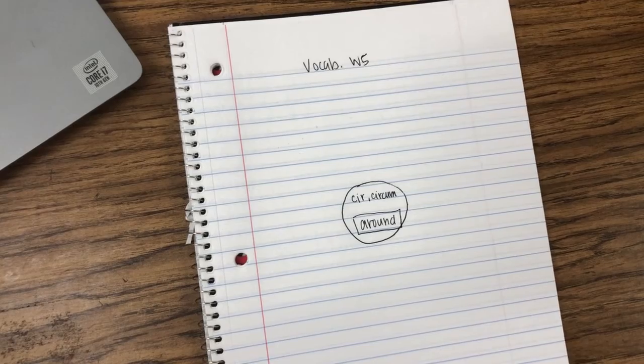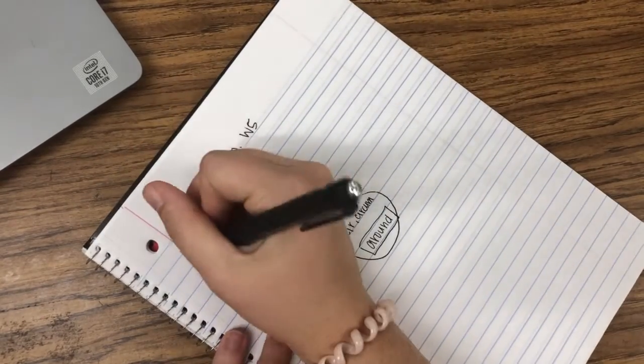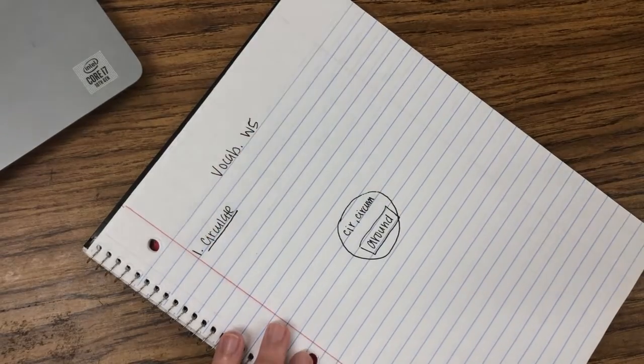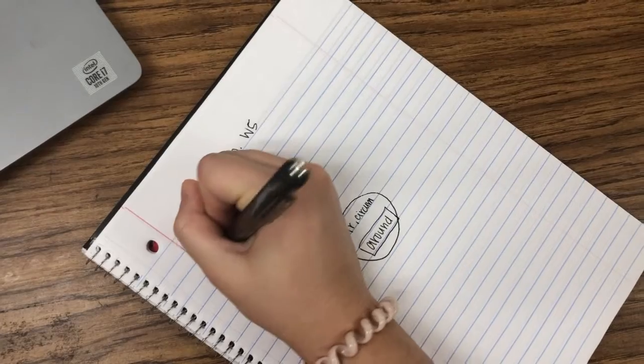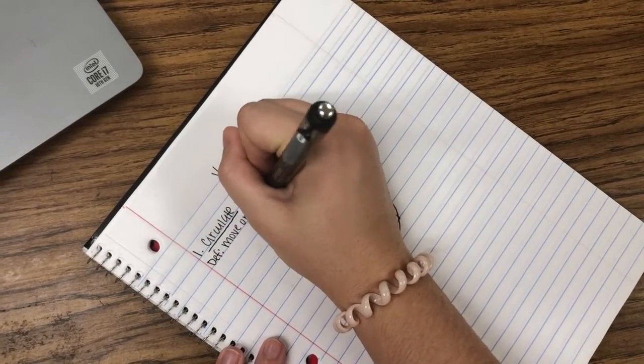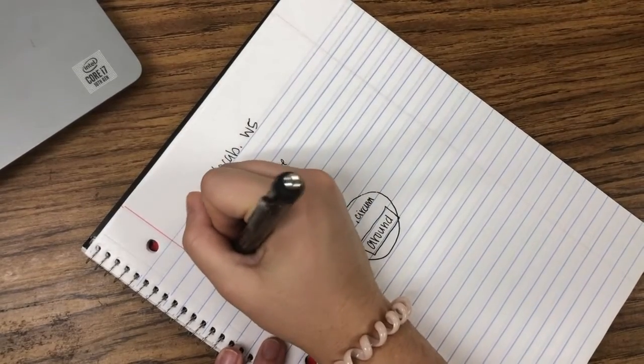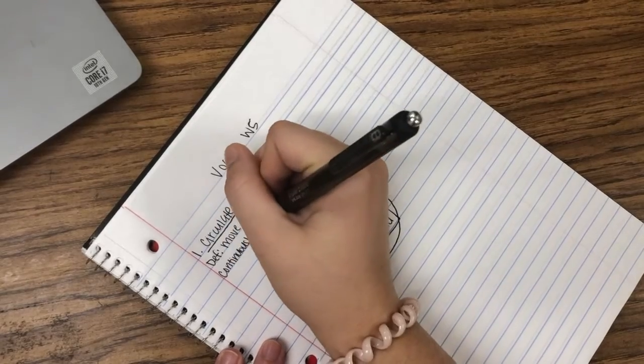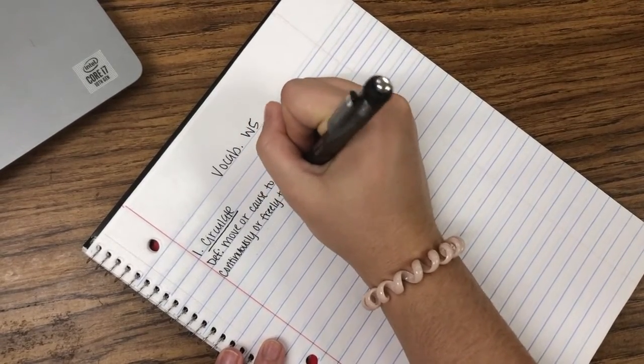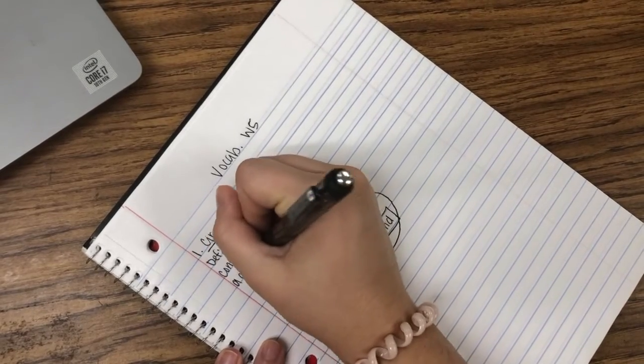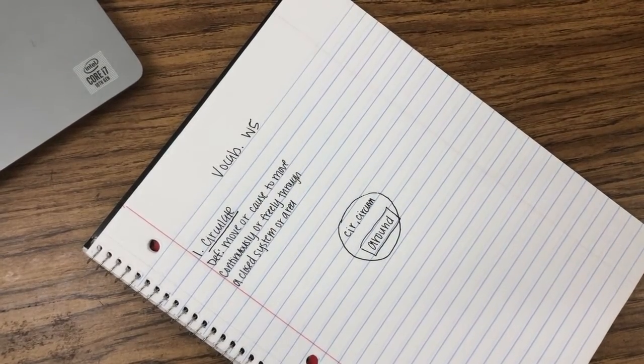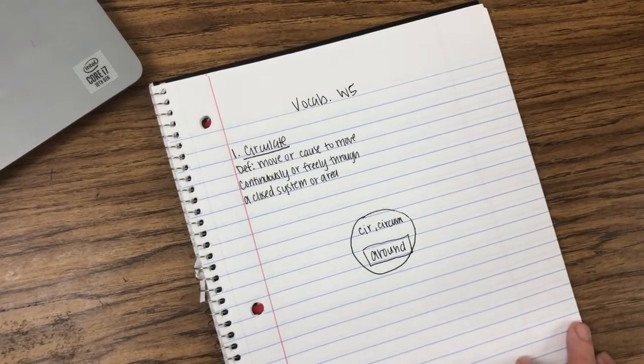Okay, our first word, word number one is circulate. The definition of circulate is to move or cause to move continuously or freely through a closed system or area.